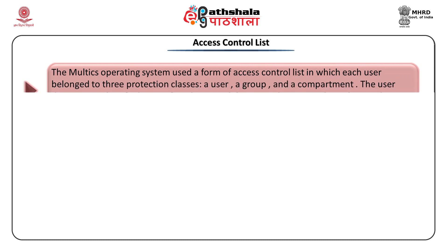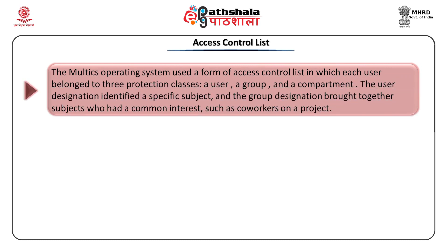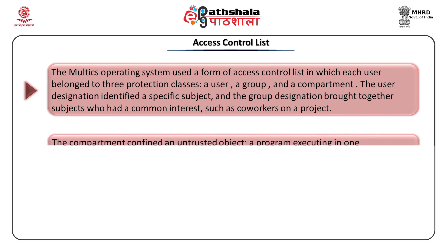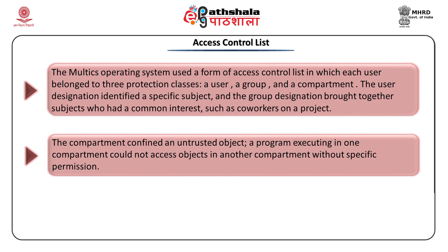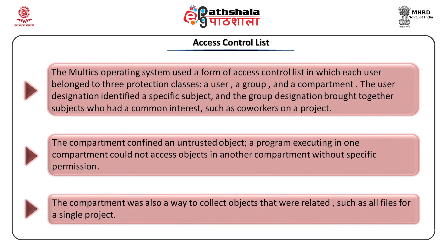The Multics operating system used a form of access control list in which each user belonged to three protection classes: a user, a group, and a compartment. The user designation identified a specific subject, and the group designation brought together subjects who had a common interest such as co-workers on a project. The compartment confined an untrusted object — a program executing in one compartment could not access objects in another compartment without specific permission. The compartment was also a way to collect related objects such as files in a single project.